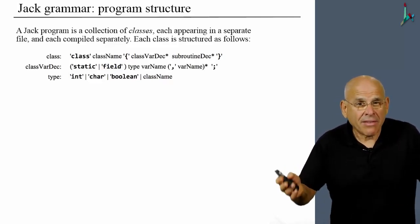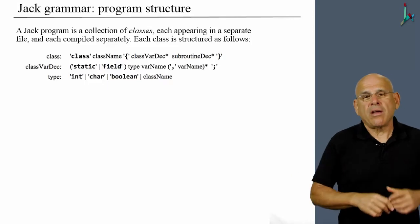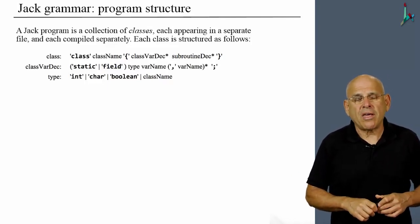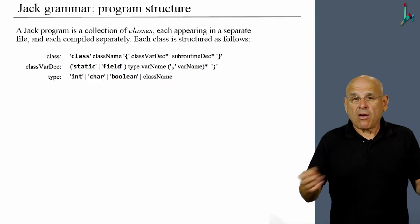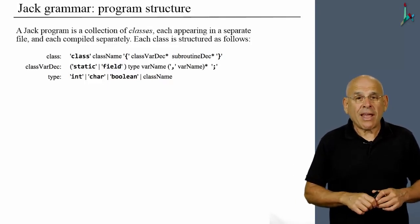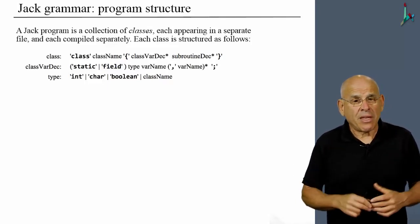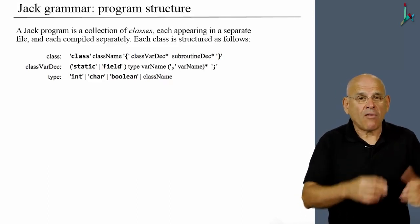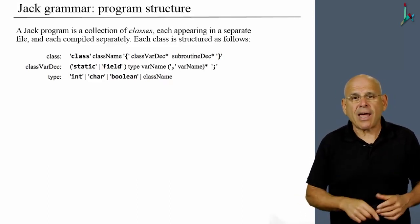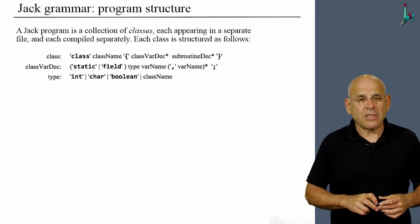And because Jack is an object-oriented language, another possibility for a type is the name of a class. So a class type is also permissible.